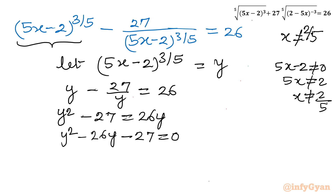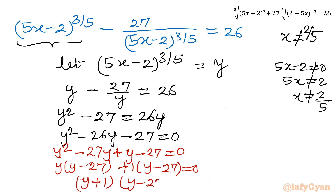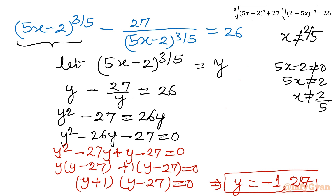Using the factorization method, I split the middle term: y squared minus 27y plus 1y minus 27 equal to 0. Taking y common from the first two terms gives y(y minus 27), and 1 common from the last two gives 1(y minus 27). So the factorization is (y plus 1)(y minus 27) equal to 0, giving y equal to negative 1 or y equal to 27.